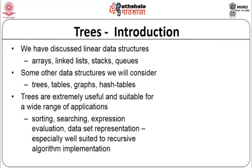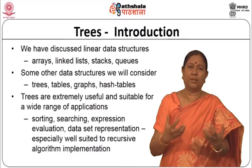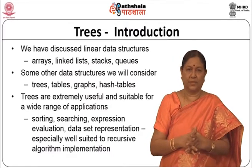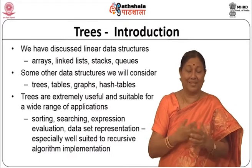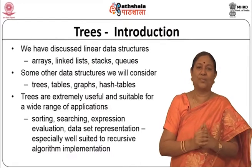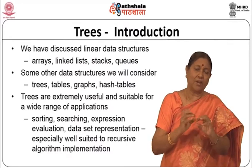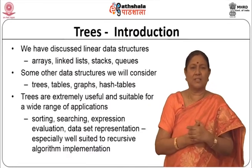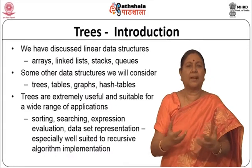Let us look at trees. What are trees? We have discussed up to now only linear data structures - arrays and linked lists. Linked lists and arrays were used for many things, and lists basically include stacks and queues. Stacks and queues were restricted lists. Stacks followed the last-in-first-out policy and queues followed the first-in-first-out policy. That is, restricted insertion and deletion was what we were talking about. We talked about a lot of interesting applications of these linear list data structures, but not all data structures can be linear.